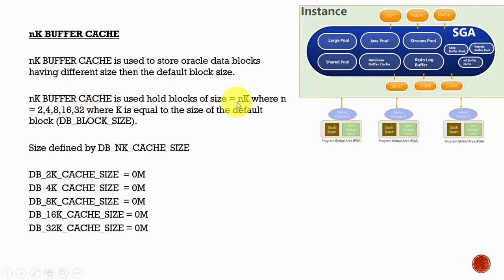Here, N is nothing but a number like 2, 4, 8, 16, 32. And K is equal to the size of the default block size. And we know the default block size is determined by the parameter db_block_size.